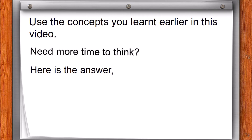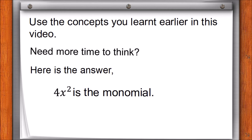Here is the answer. 4x squared is the monomial. And now you know why — because this algebraic expression is made up of only one term.